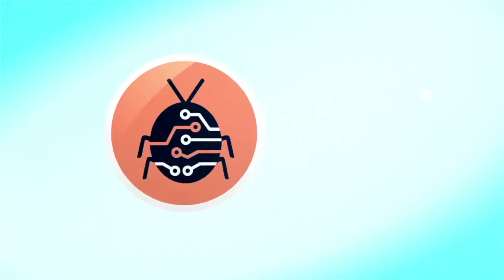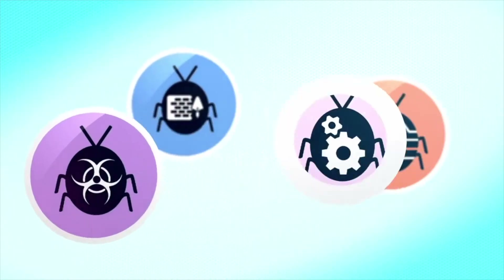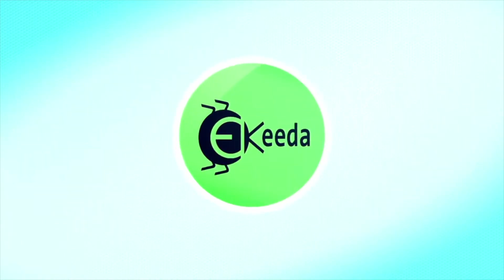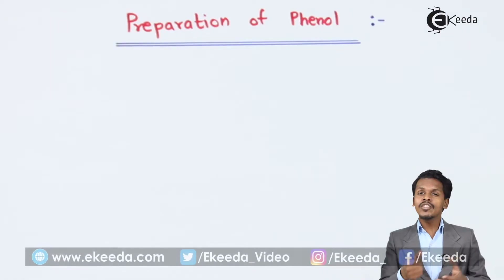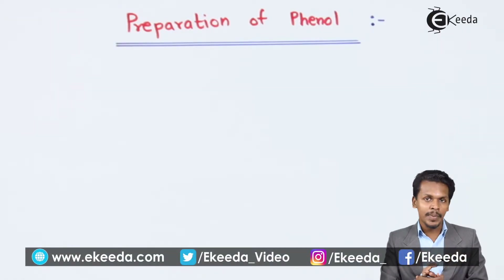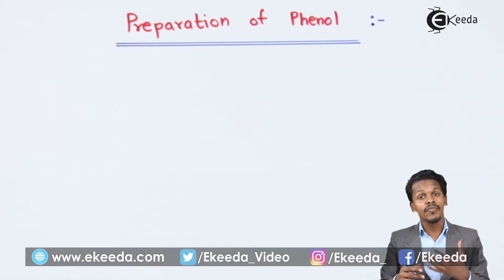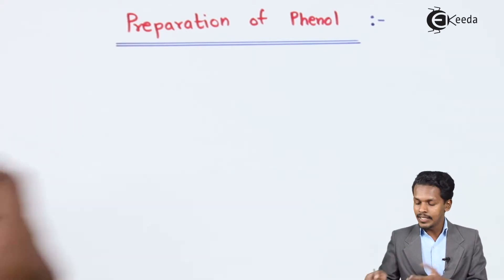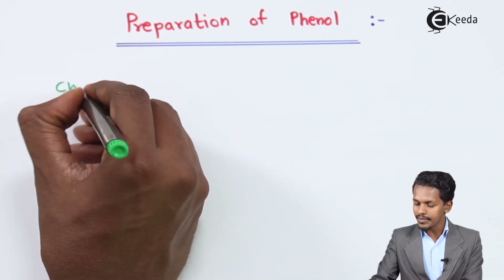In this topic I am going to give a summary about how phenol has been prepared. I am going to talk about four reactions from which we can prepare phenol. The first one is that phenol can be prepared from chlorobenzene.